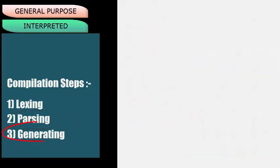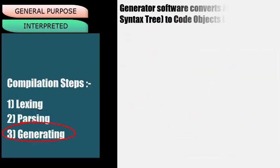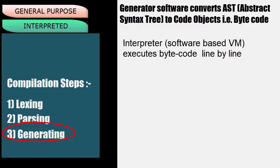Generating is the next process. Here, the generator converts the AST to code objects — that is, bytecode. The interpreter then takes over the bytecode and executes it line by line.